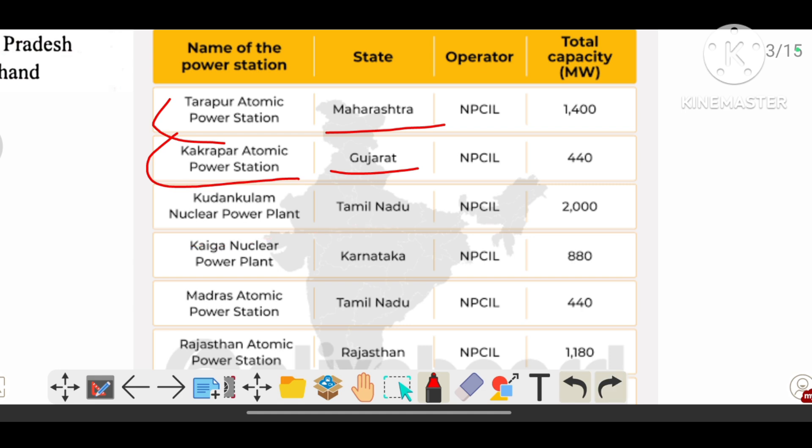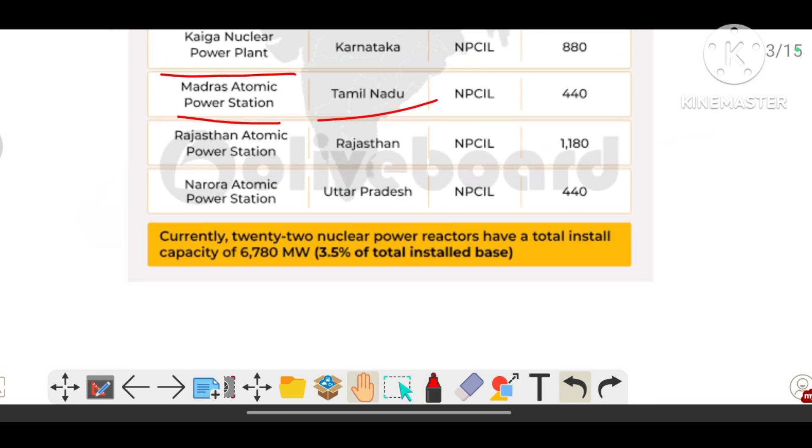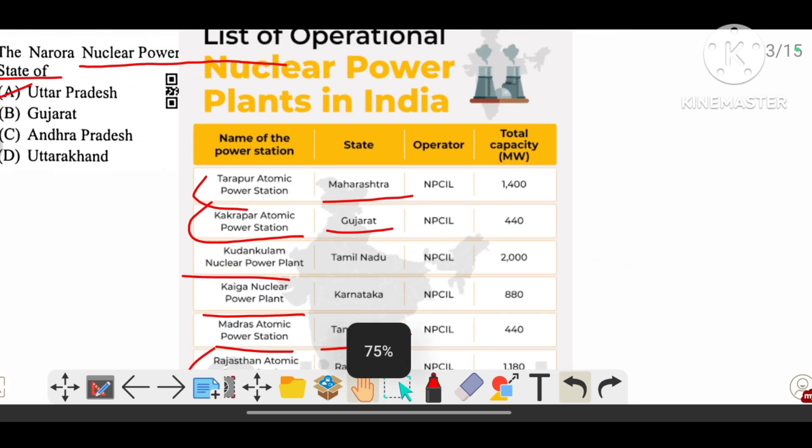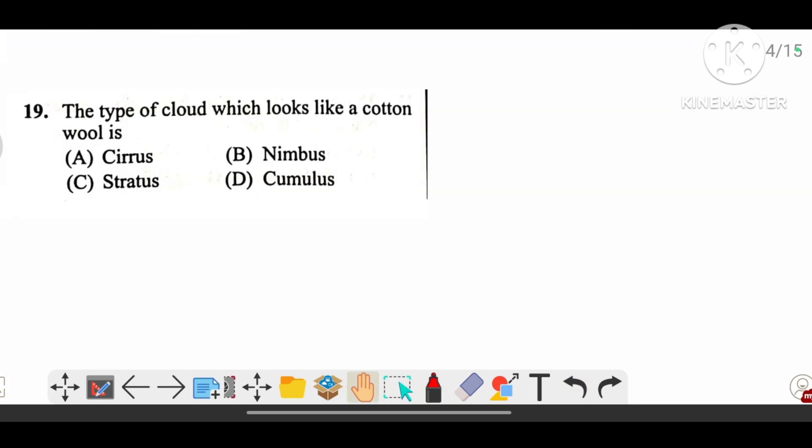Kaiga that is in Karnataka, Madras that is in Tamil Nadu, Rajasthan would be in Rajasthan, and Narora that is in Uttar Pradesh. So these are the list of nuclear power plants in India.